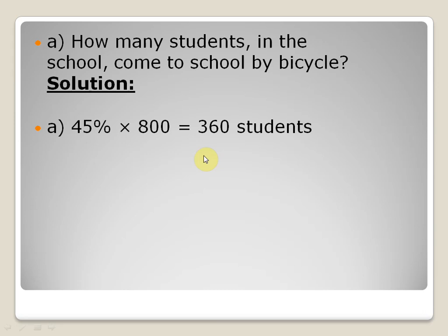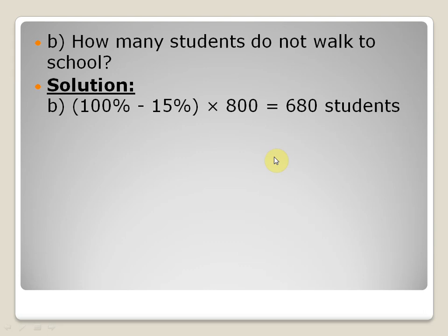Next: how many students do not walk to school? You see that there are 15% students who are walking towards school. If we subtract from 100%, the remaining is 85% of the total students which do not walk to school.